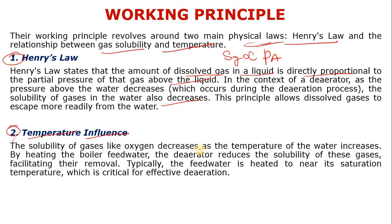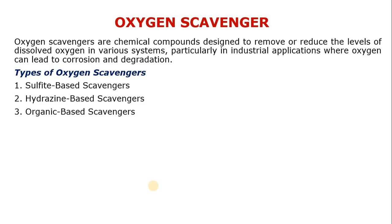The second principle is temperature influence: the solubility of gases like oxygen decreases as the temperature of water increases. By heating the boiler feed water, the de-aerator reduces the solubility of these gases, facilitating their removal. Typically the feed water is heated to near its saturation temperature, which is critical for effective de-aeration. As you increase the temperature, solubility decreases, and the dissolved gases are removed.